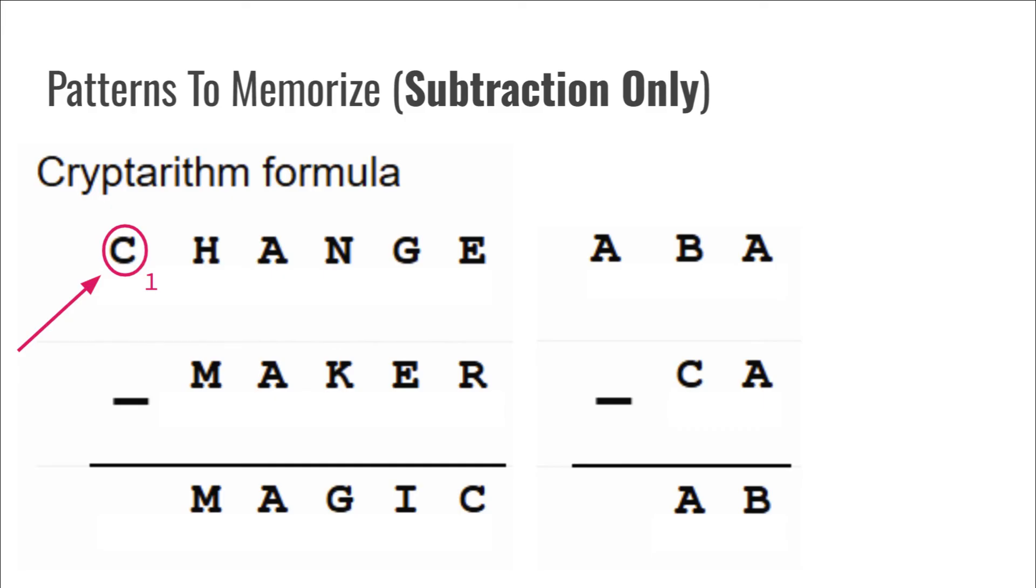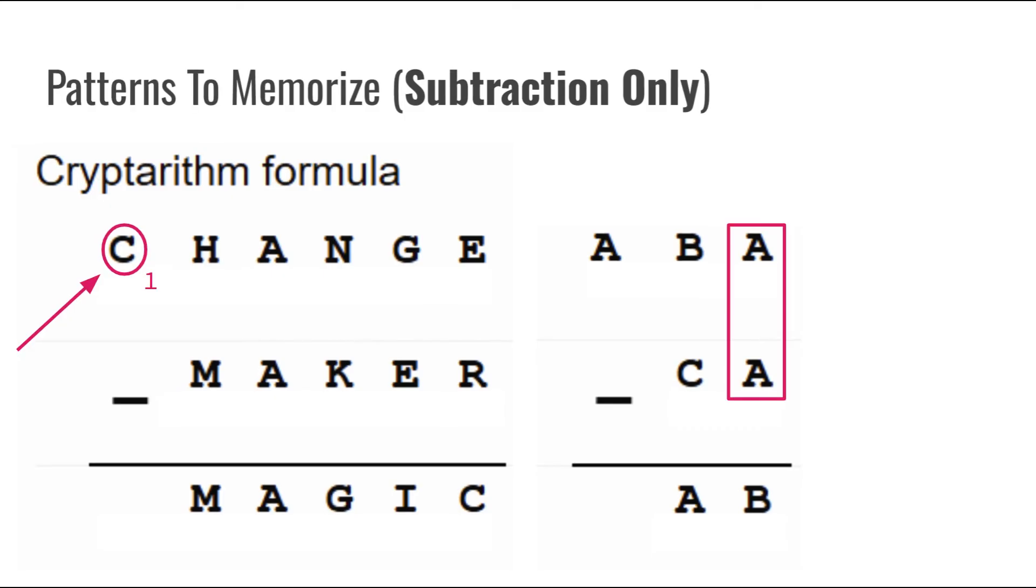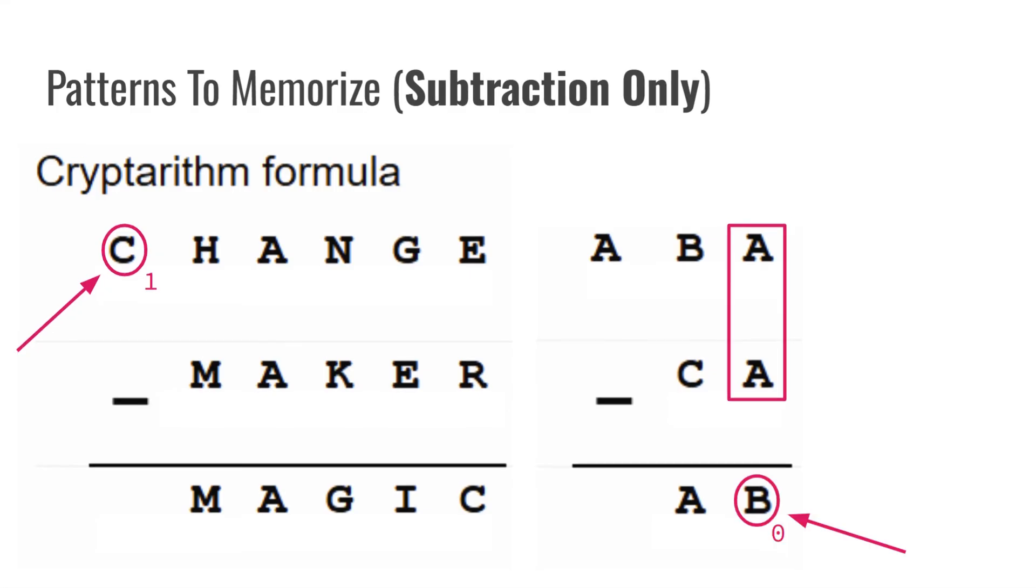Now with the second pattern, we can see the last column holding the same number twice. Since both of these are the same exact number, we know that if you subtract a number by itself, it equals 0. So if this pattern is seen, we can confidently say that B is equal to 0. Now these patterns I just covered only apply to subtraction cryptarithms, so make sure you do not use this on any addition problems when you're doing a cryptarithm.